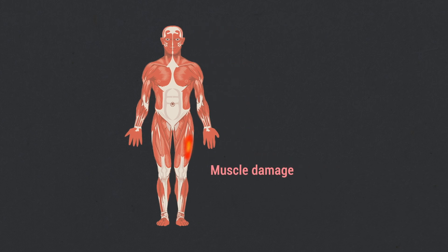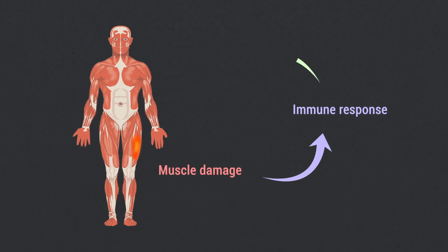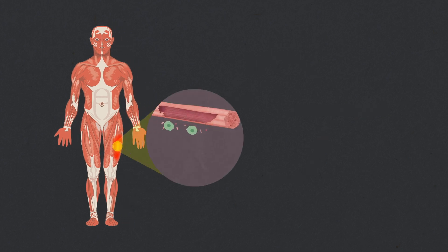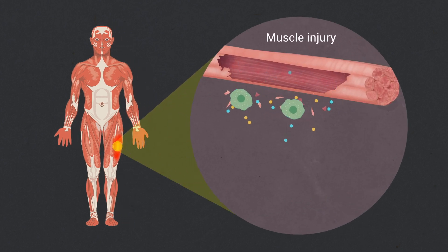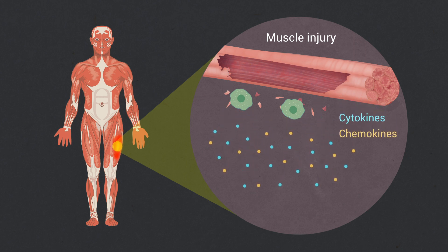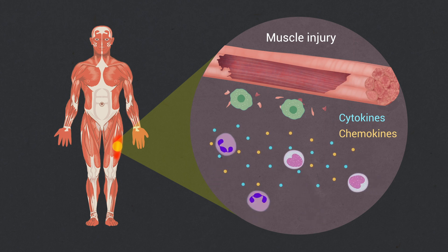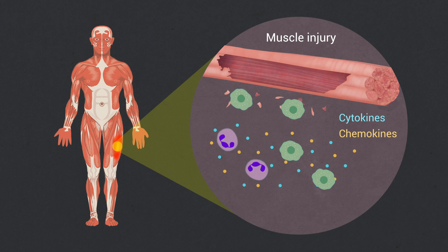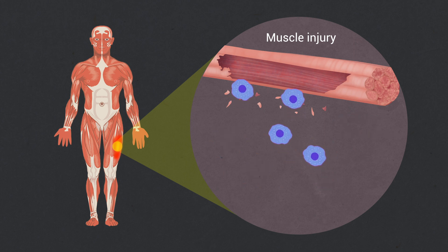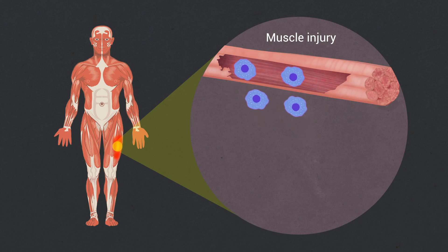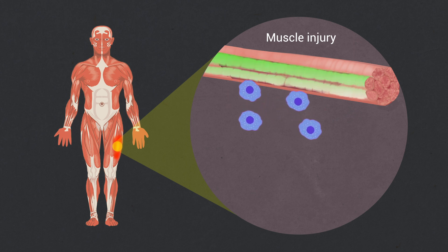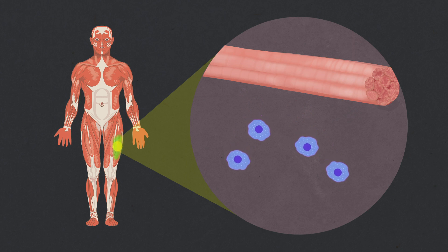Skeletal muscle damage elicits a sterile immune response that facilitates complete regeneration. This dynamic process is characterized by initial production of pro-inflammatory mediators, including cytokines and chemokines, by resident cells at the site of injury, followed by rapid myeloid cell recruitment. Termination of pro-inflammatory mediator production and subsequent apoptotic cell clearance defines the beginning of the resolution phase of acute inflammation, which couples to tissue repair and regeneration.